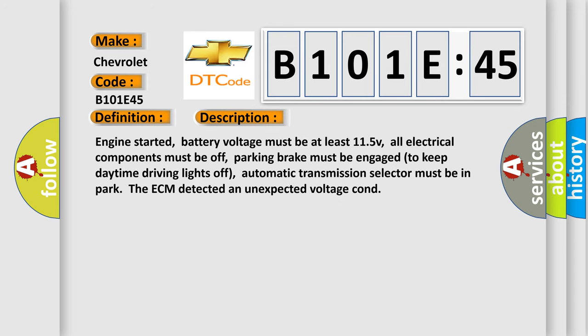Engine started, battery voltage must be at least 11.5V, all electrical components must be off, parking brake must be engaged to keep daytime driving lights off, automatic transmission selector must be in park. The ECM detected an unexpected voltage condition.